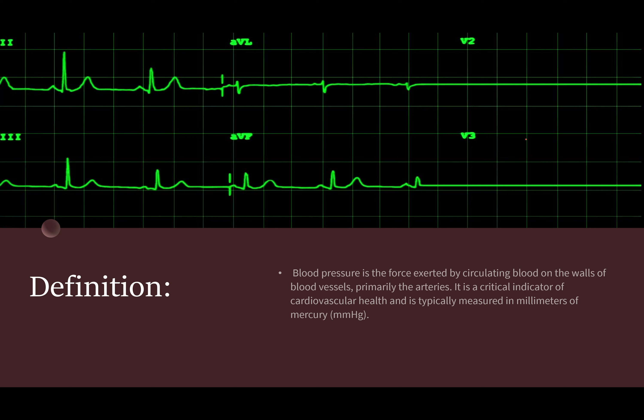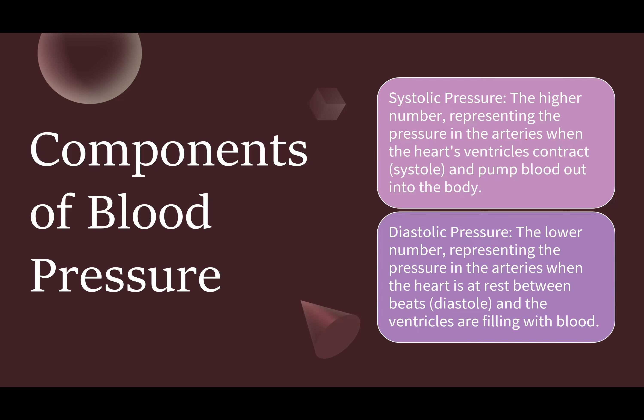Blood pressure is a critical indicator of cardiovascular health and is typically measured in millimeters of mercury — that's why we use millimeters of mercury for all the pressures in the heart. The components of blood pressure are systolic pressure and diastolic pressure. The higher number represents the pressure in the arteries when the heart ventricles contract — that's systolic. Diastolic is the lower number, representing the pressure in the arteries when the heart is at rest.